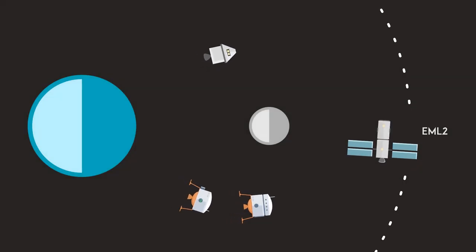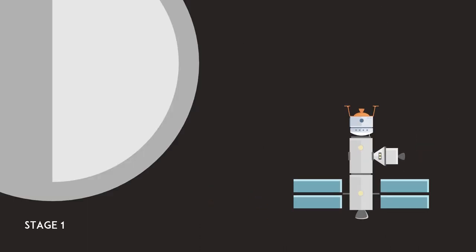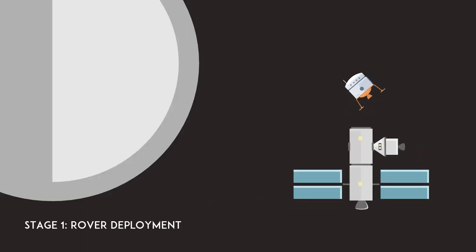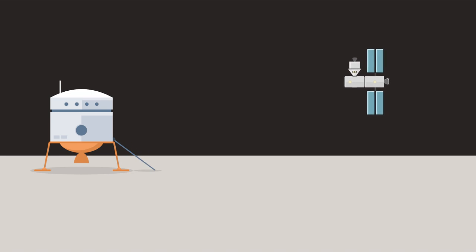All mission assets will be launched to the EML2 station in advance of the mission. The mission operations begin with the undocking of the first lander from the station and its landing near the lunar South Pole. Then the rover starts work to prepare landing areas for the arrival of future landers.